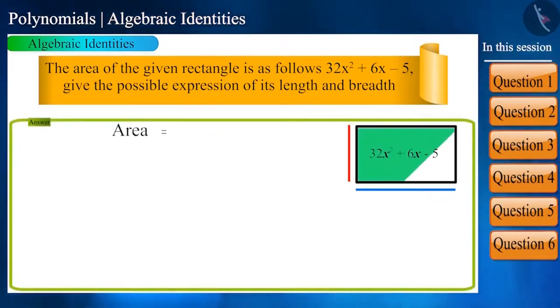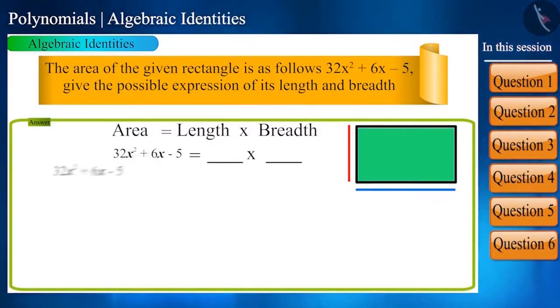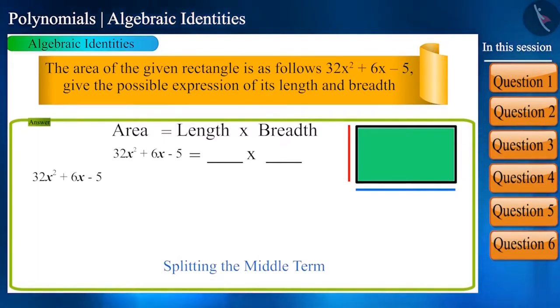Friends, the area of a rectangle is length multiplied by breadth. The area of a rectangle is a quadratic polynomial. After finding its factors, we have to substitute it with the length and the breadth. This means we have to find the factors of this polynomial. We will solve this polynomial 32x square plus 6x minus 5 by splitting the middle term method.